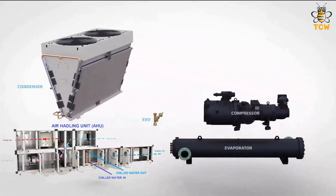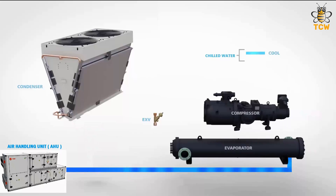The air handling unit is the equipment used to cool the air in the building. To cool the air, the heat in the air needs to be absorbed. Chilled water is cooling water used to absorb heat from the air inside the building in the air handling unit, which causes chilled water temperatures to increase. The chilled water then carries the heat to the evaporator.